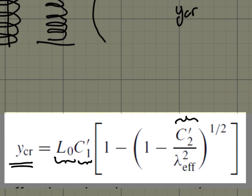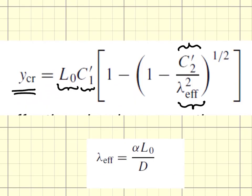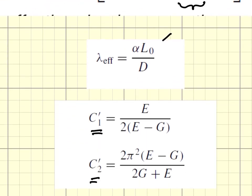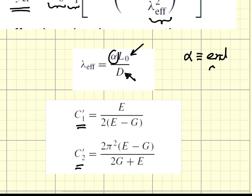and the square of the effective normalized length of the compression spring. You can think of this as a slenderness ratio because it is composed of the free length divided by the coil diameter, a normalized dimension, and you multiply that by a constant alpha. That alpha is an end condition.